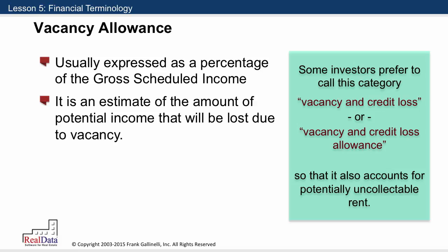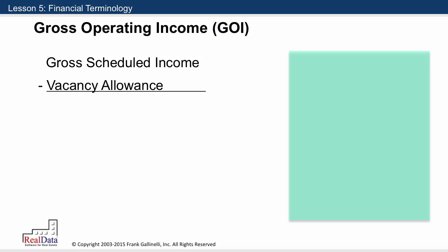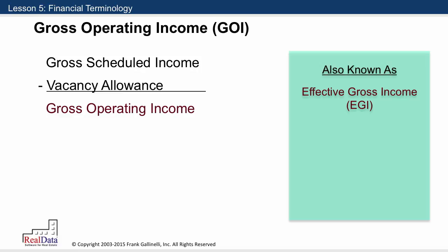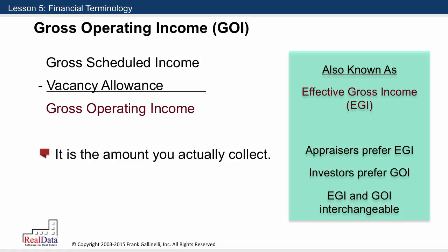The third item is simply the difference between the first two, and this is called gross operating income — that's the gross scheduled income less the vacancy allowance. This one has a second name as well; it's also very often called effective gross income, or EGI. In my experience, appraisers tend to prefer the term effective gross income, while most investors tend to prefer gross operating income. Both terms can be used interchangeably — they mean exactly the same thing. In short, this is the amount you actually collect: the total potential income minus what you've lost from vacancy and credit.